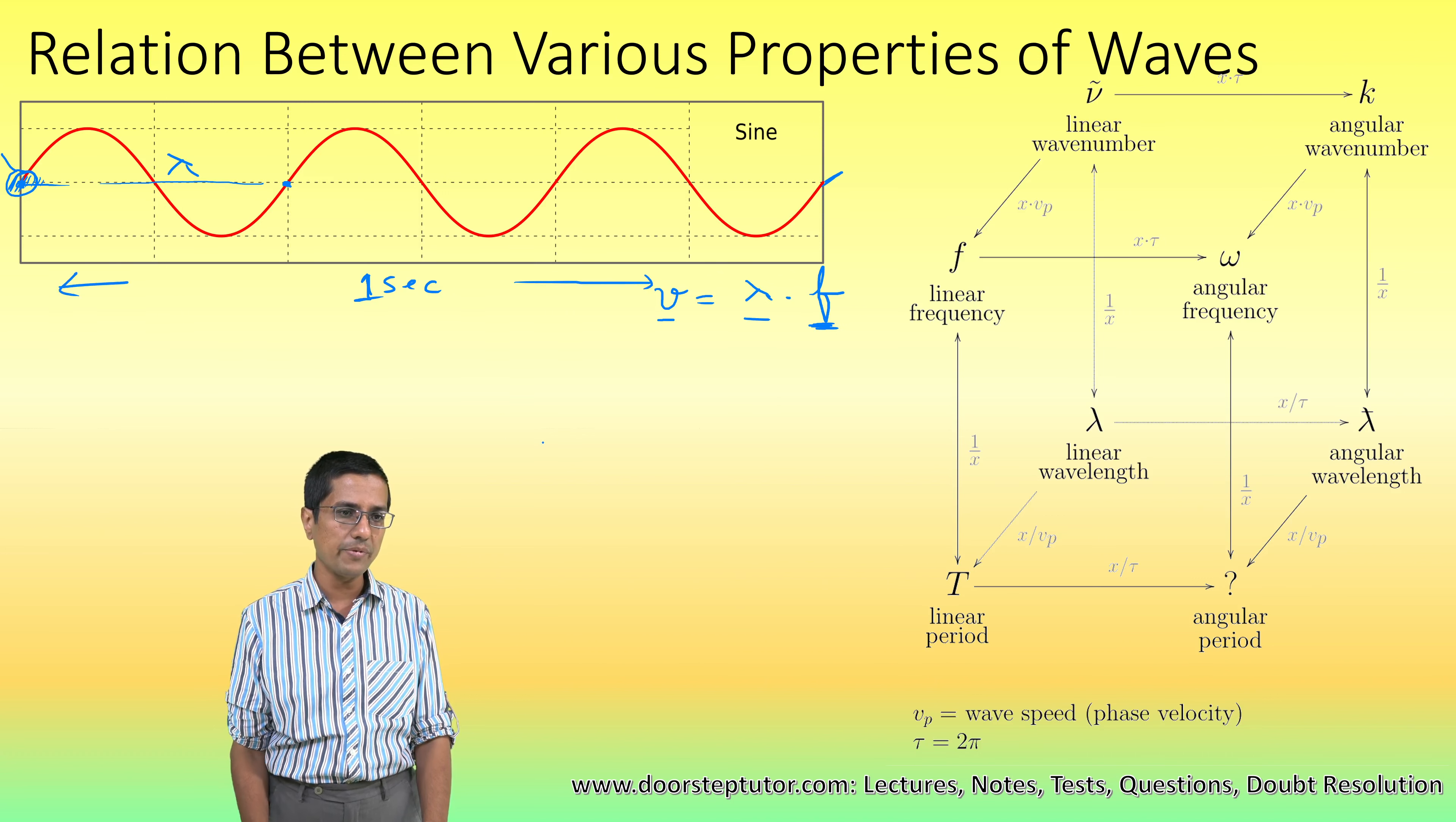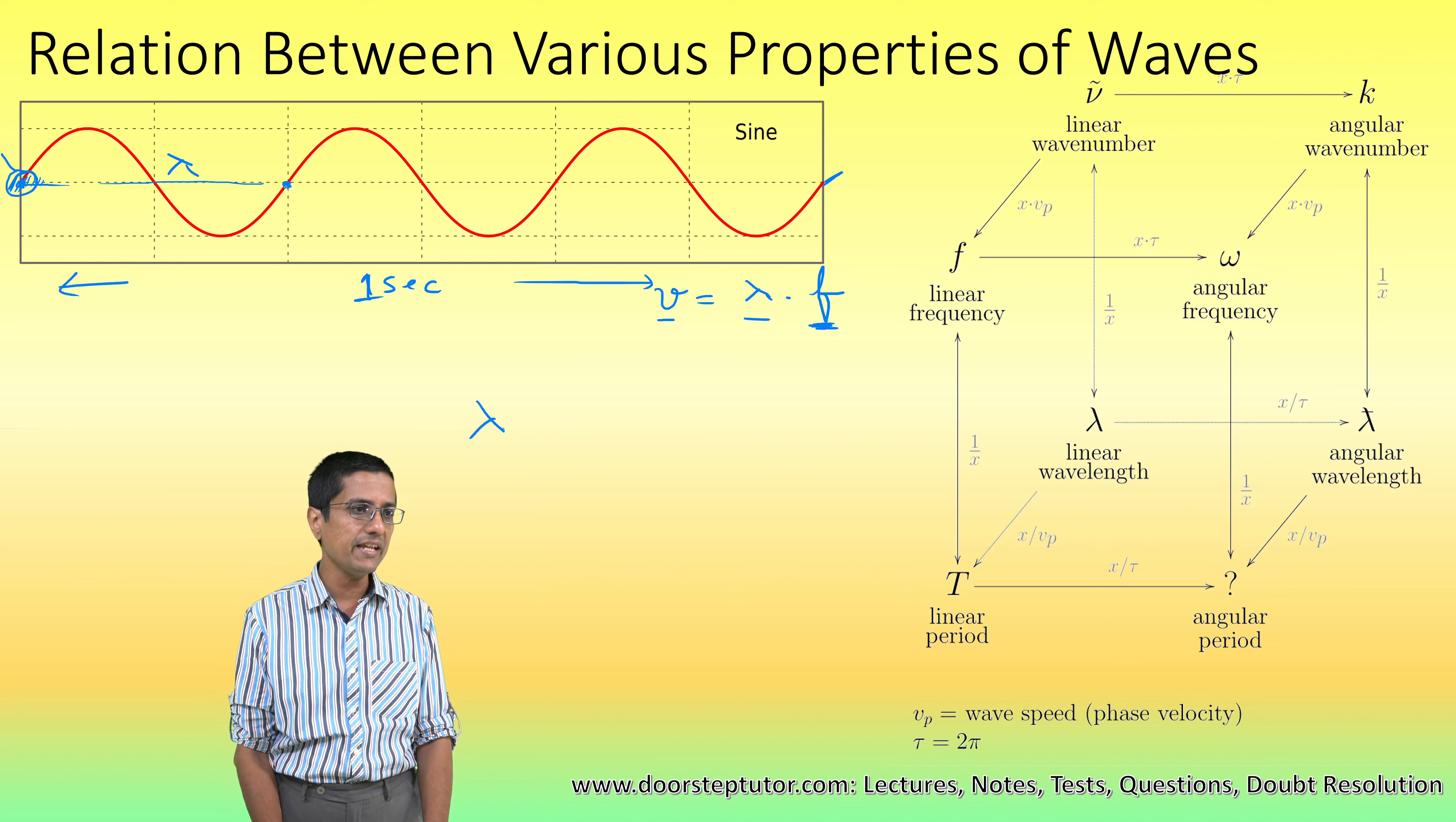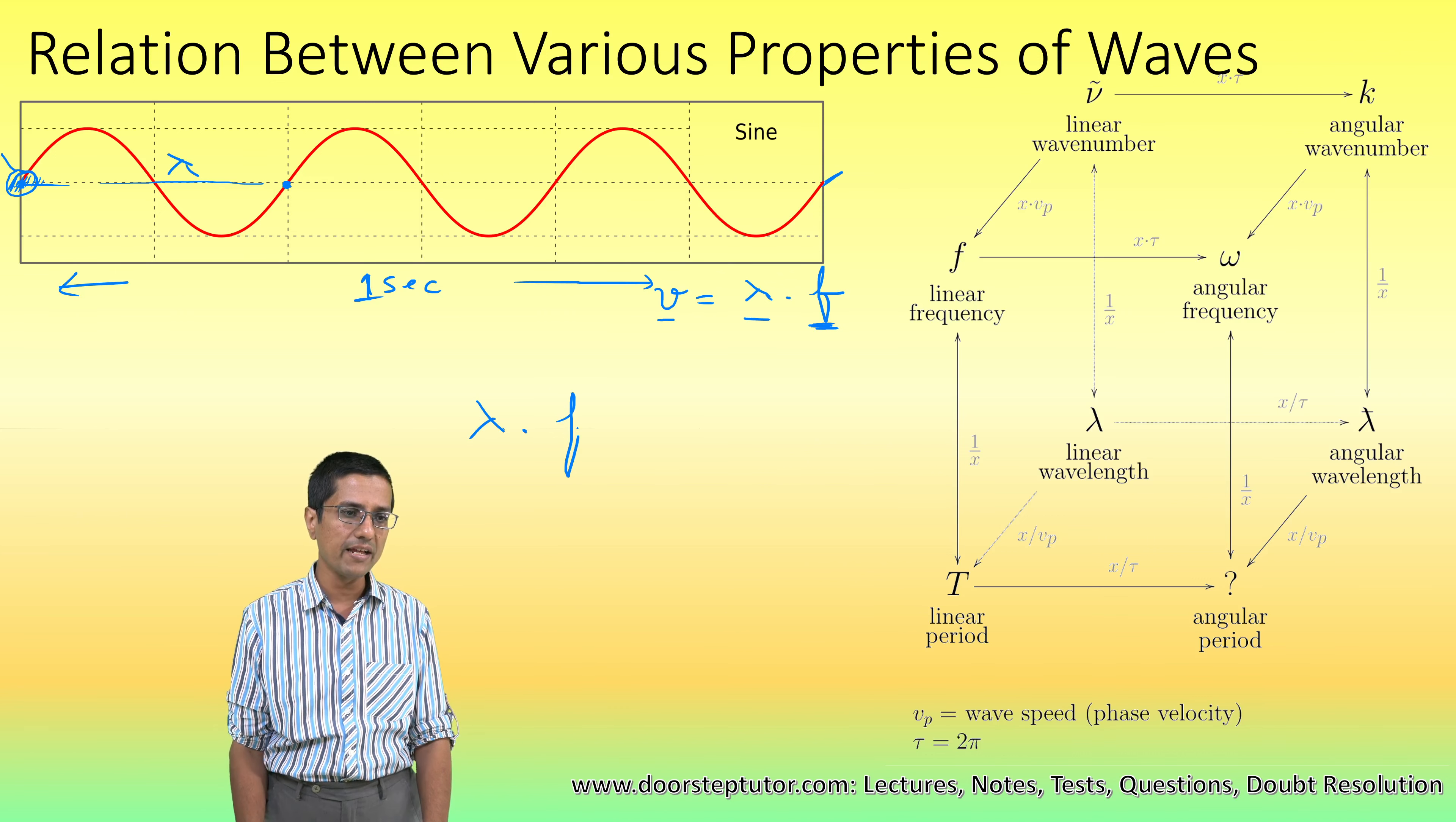The distance from here to here is actually equal to lambda, which is the length of one pattern, multiplied by the number of patterns, which is given by frequency.